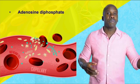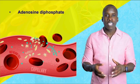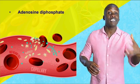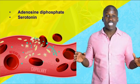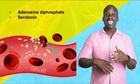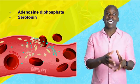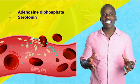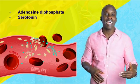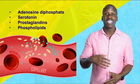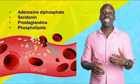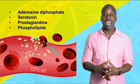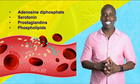As the plug forms, the platelets release other substances that help the process even more. They release ADP — adenosine diphosphate — which helps to attract even more platelets to the site of injury. They also release serotonin, which in this situation stimulates and helps to maintain the vasoconstriction we spoke about earlier. Other substances released include prostaglandins and phospholipids, which help to maintain vasoconstriction as well and also help to activate other clotting factors.